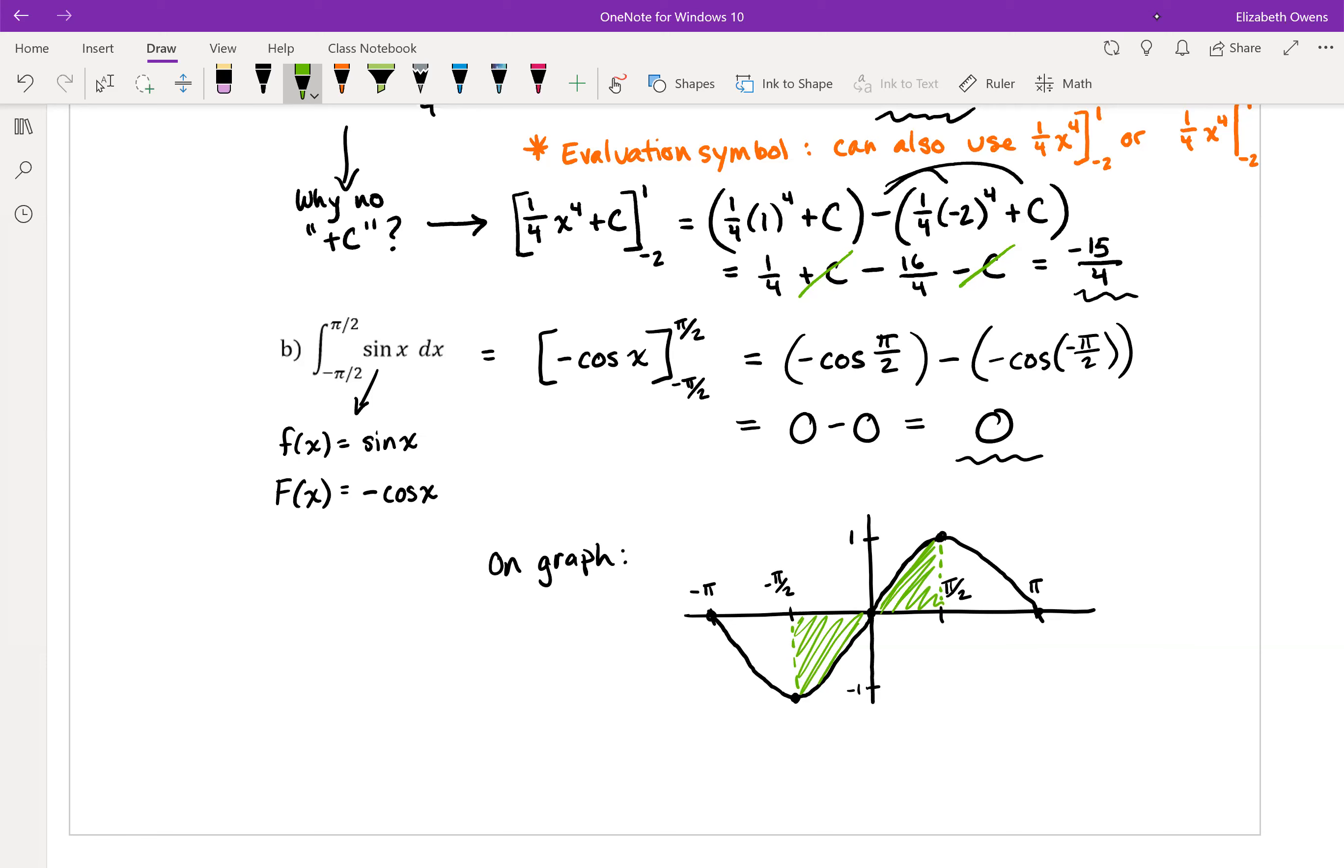And remember that the areas, when we're looking at net area, pieces above the x-axis count as positive, and pieces below the x-axis count as negative. And we have two symmetrical pieces there, so the area is just kind of negating itself. The net area on this cancels out, so the integral is actually going to be 0.